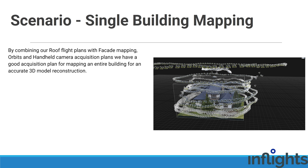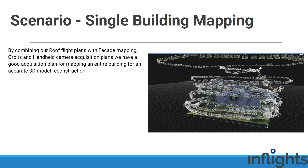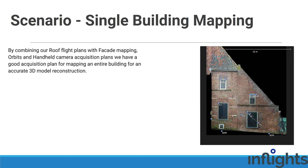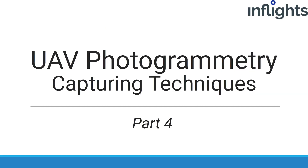By combining roof flight plans with facade mapping, orbits, and handheld camera acquisition plans, we get a good acquisition plan for mapping an entire building for accurate 3D model reconstruction and 2D ortho projections. Let us know if you need more detailed consultations. We explained camera settings, ground control points, and much more in the previous videos — be sure to check those out and let us know what you would like to see in the next part.